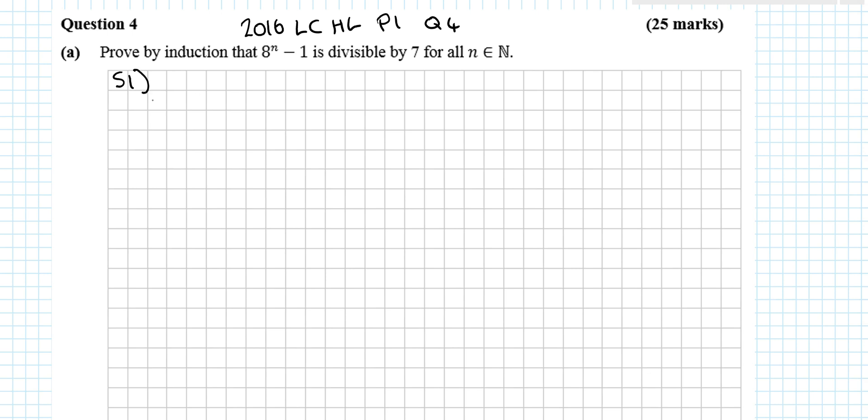Step 1. Prove true for smallest allowable n. And that in this case is n equals 1 because it's not restricted, it's all n's. 8^1 minus 1, so we're just subbing it in, and that's 8 minus 1, and that is 7.